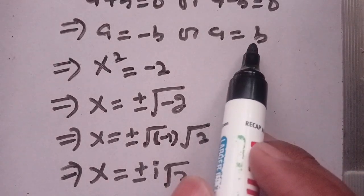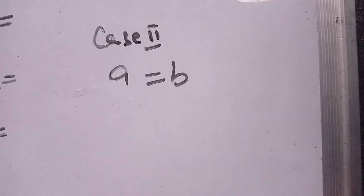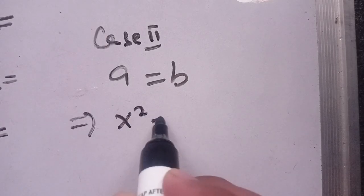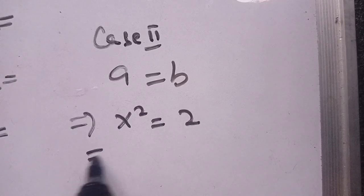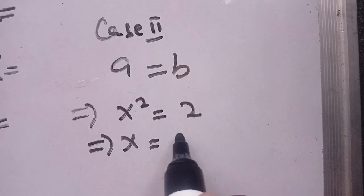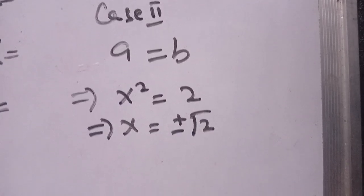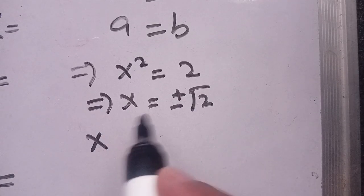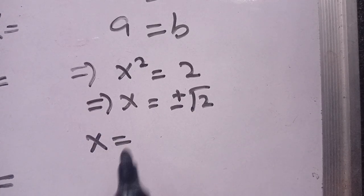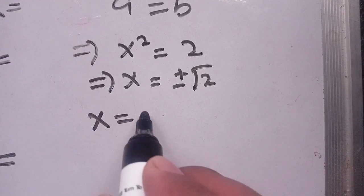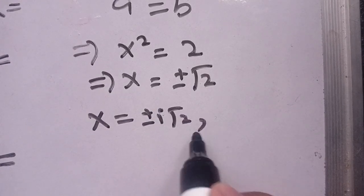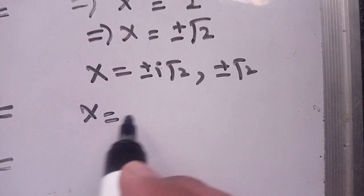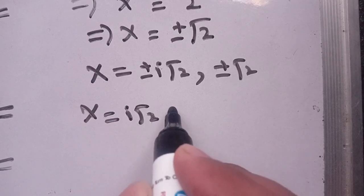The second case is a equals b. When a equals x squared and b equals 2, which implies x equals plus or minus square root of 2. Thus there are two values of x in Case 1 and two values in Case 2. Our complete set of values of x is: plus or minus iota root 2, and plus or minus root 2. So x equals iota root 2, root 2, minus iota root 2, and minus root 2.